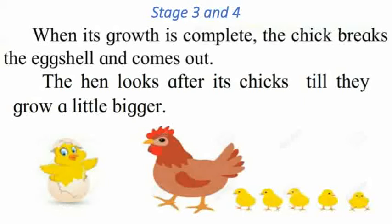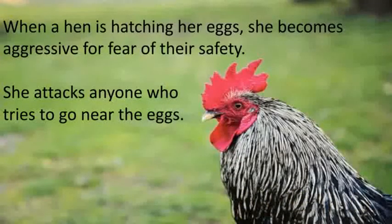Stage 3 and 4: when the chick's growth is complete — meaning when the chick has grown fully inside the egg — the chick breaks the eggshell and comes out. Eggshell means the cover of the egg. The chick breaks from inside and comes out. Then the hen looks after its chicks until they grow a little bigger. These are the third and fourth stages.